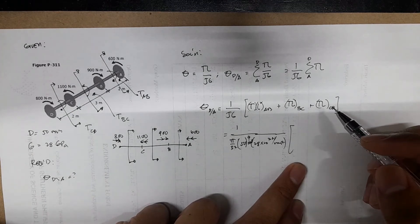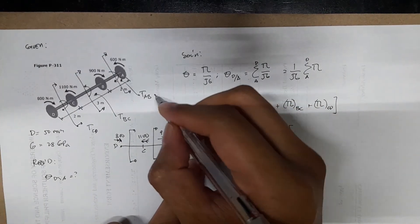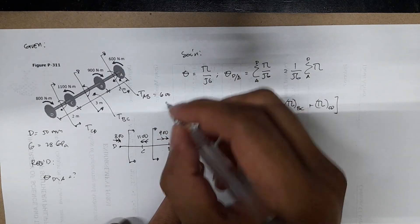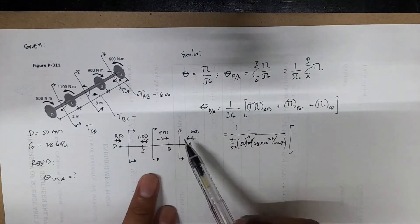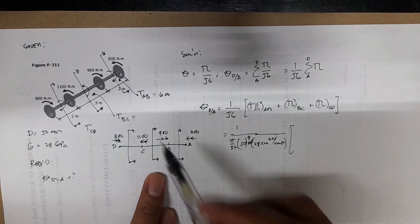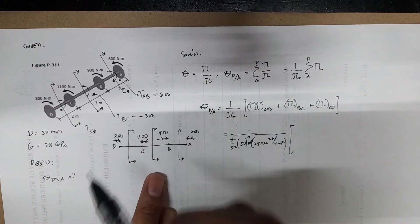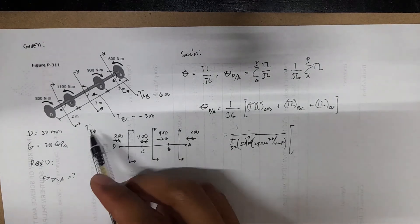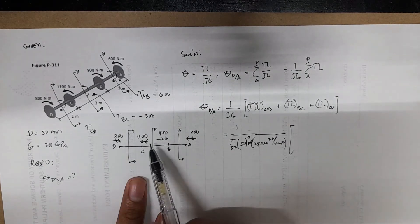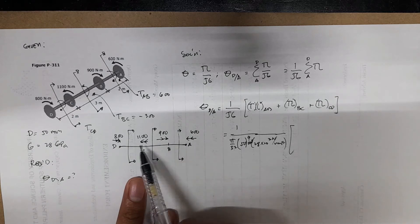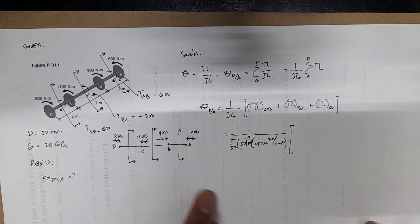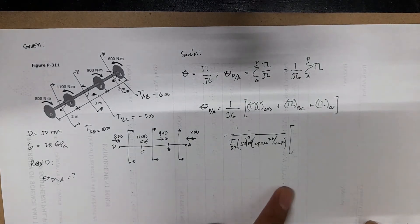So torque AB by inspection, you can have 600, which is positive. And then you have BC by inspection, you will have negative 300, which is directed to the negative x. So torque CD, you will have positive 800. So that's how we get the torques for the segments.